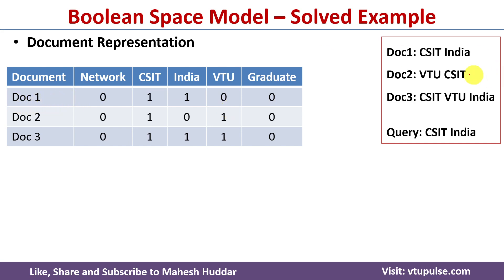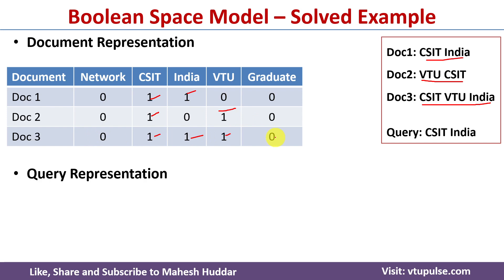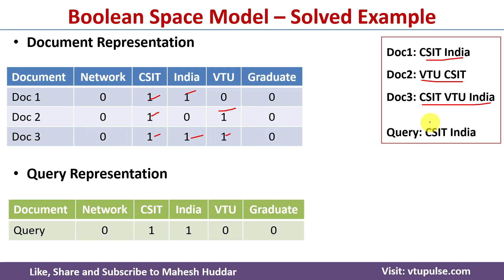In Document 1, csit and india are present, so they are noted as one and the remaining terms are noted as zero. In Document 2, vtu and csit are present, so csit and vtu are noted as one and the rest as zero. In Document 3, csit, vtu, and india are present, so those are noted as one and the remaining two as zero. For the query representation, csit and india are present so they are noted as one, and the remaining three terms are noted as zero.